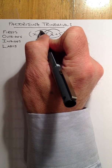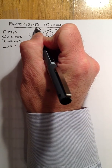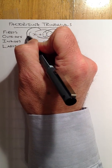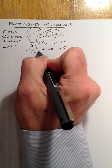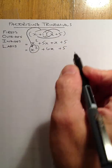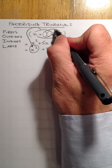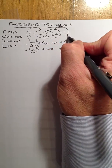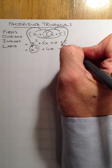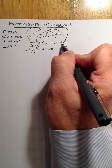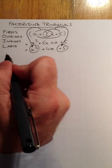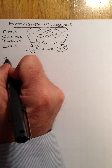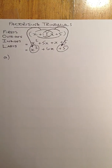The important things to remember: multiplying out the first terms will give me the first term in the trinomial. Multiplying out the lasts will give me the last term in the trinomial. And that's important for us. Let's go on to an example of factorising trinomials.